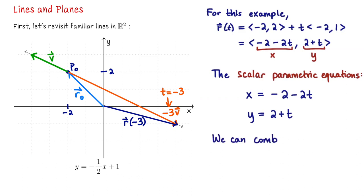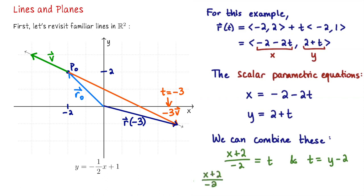We can combine these equations to return back to our starting equation y equals negative one-half x plus 1. To do that, we substitute to eliminate t. From the first equation, t equals (x + 2) divided by negative 2. From the second equation, t equals y minus 2. Setting these equal: (x + 2) / (-2) = y - 2. Multiplying through by negative 2 gives x + 2 = -2y + 4, and simplifying we get y equals negative x over 2 plus 1. This confirms that our new vector description of this line is consistent with our original algebraic description.